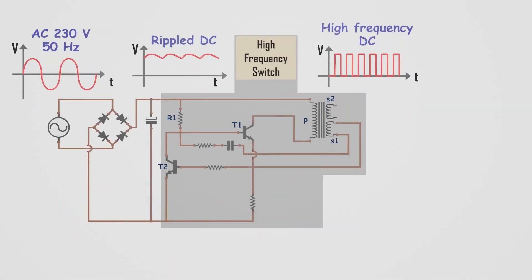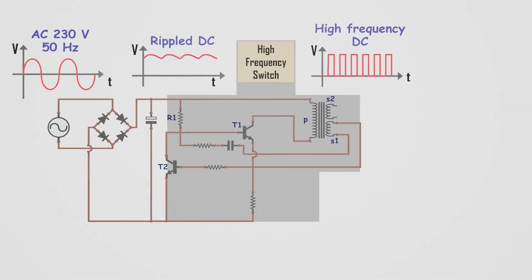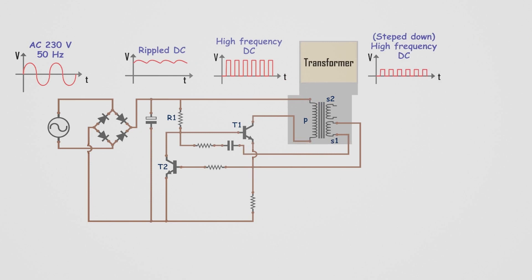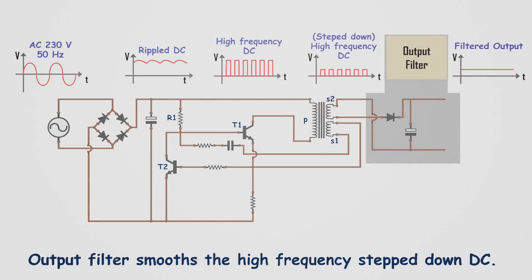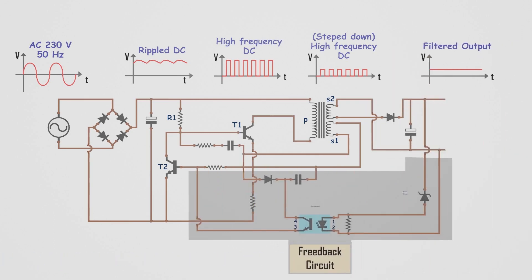Next, move on to the final parts of the circuit. Now, the transformer steps down this high-frequency DC to the desired level. Next is the output filter. It smooths the high-frequency step-down DC by reducing voltage variations. Finally, the feedback path. It mainly consists of a zener diode and optocoupler.